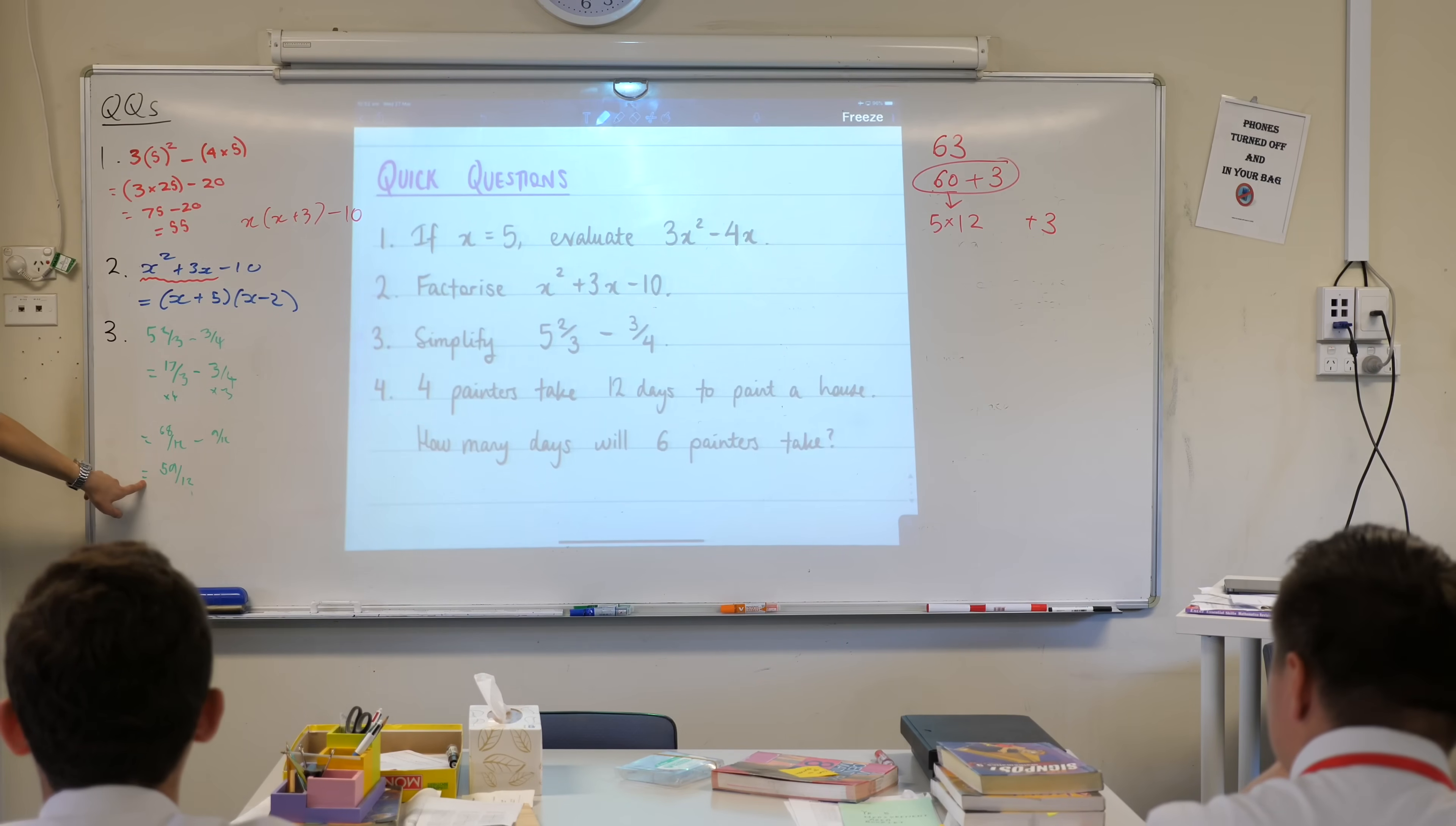59 over 12. Sorry, who put this answer up? What was your name, sorry? Will. Will, okay. Do we have some agreement on 59 over 12? Is it okay to change it to a mixed numeral? Before I come to your question, which I will answer, do I have any agreement on 59 over 12 or do I have different answers? Who's got a different answer to that? What did you get?